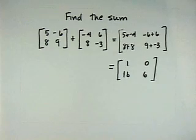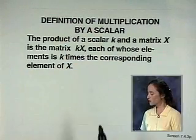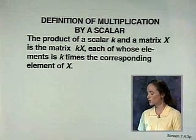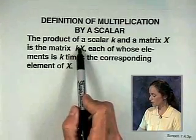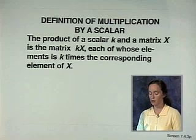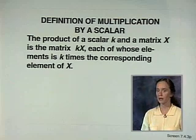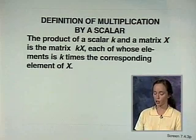The next operation with matrices is something called multiplication by a scalar. Think of a scalar as a constant or a number. The product of a scalar K and a matrix X is the matrix K times X, each of whose elements is K times the corresponding element of X. Let's do a scalar multiplication problem and combine it with the operation of addition.